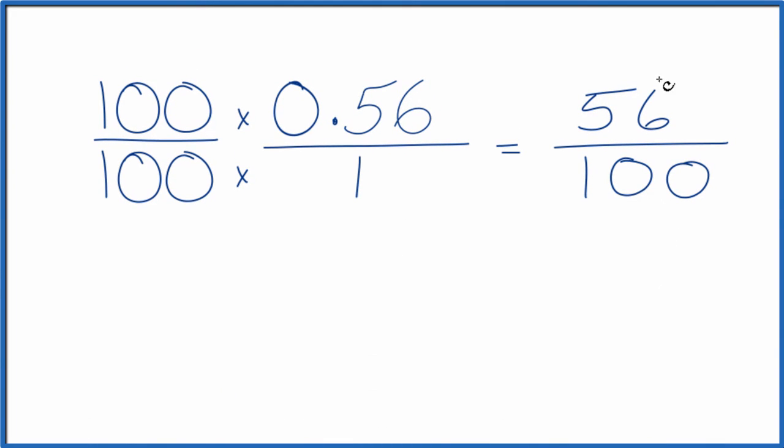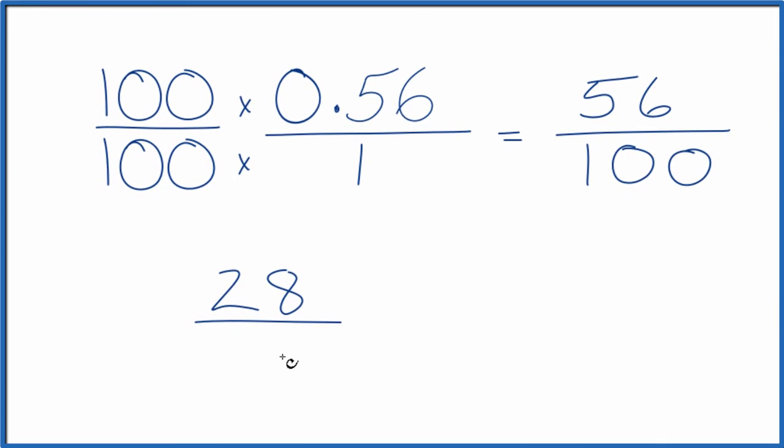Since these are both even numbers, let's divide both of them by 2. 56 divided by 2 is 28, and 100 divided by 2 is 50. So we end up with 28 over 50. 0.56 as a fraction is also 28 over 50.